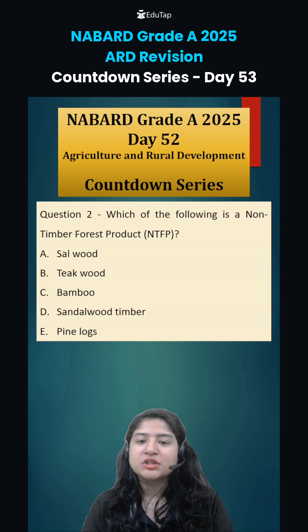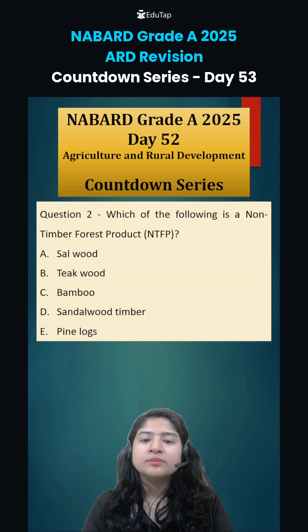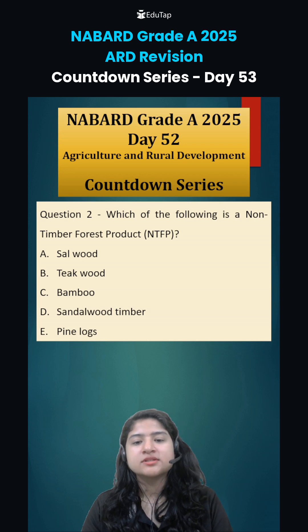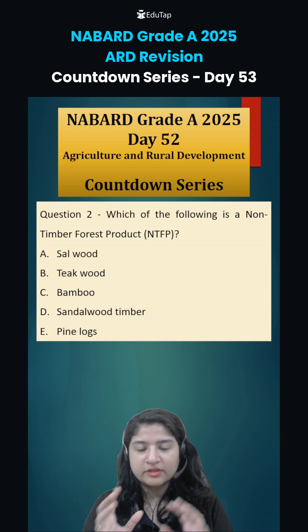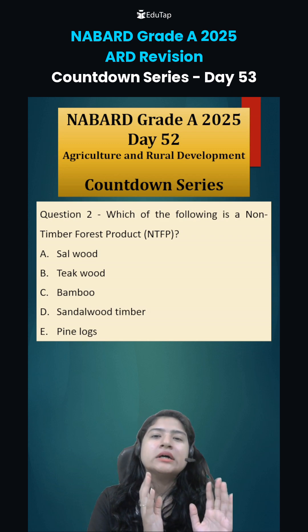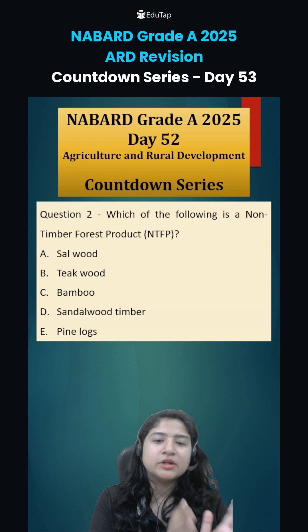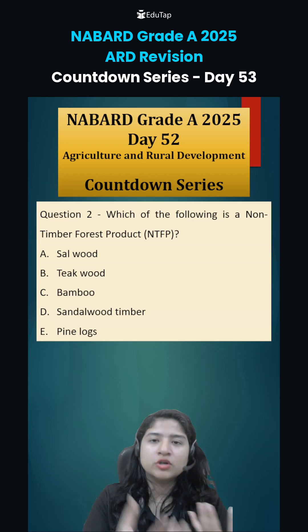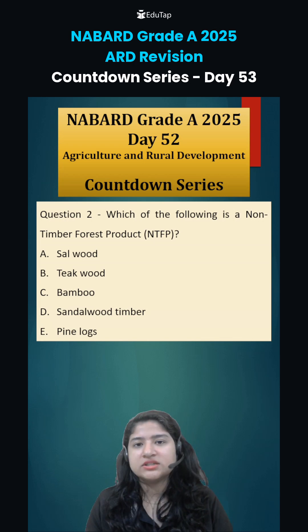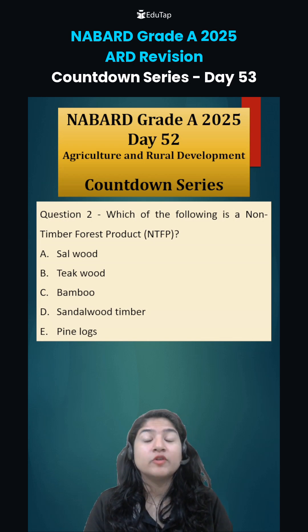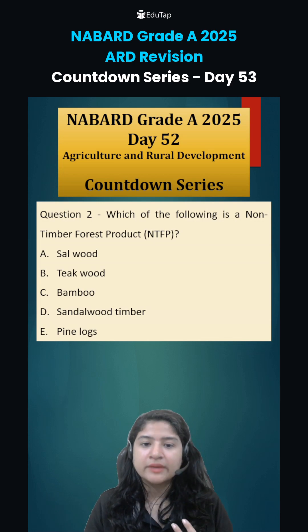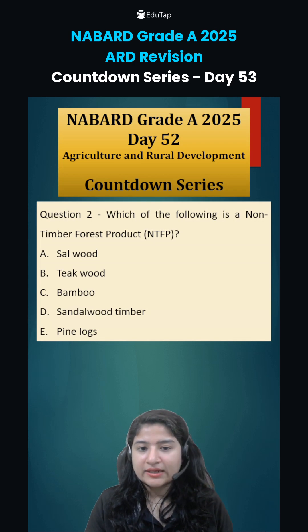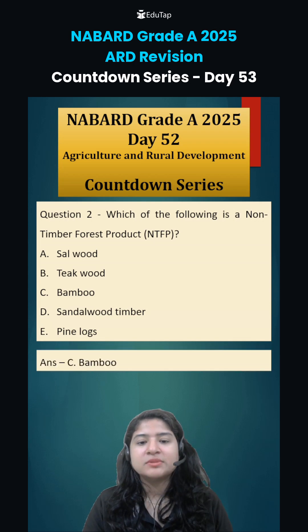Coming to question number two: which of the following is a non-timber forest product? Basically, in forests there are not only timber products — the wood used for furniture — but there are other produce also, for example honey, resin, lac, gum, etc. Similarly, option C, bamboo, falls in this category.